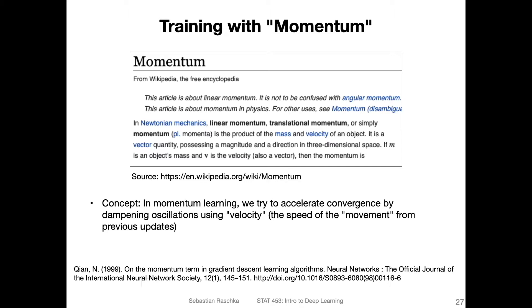Here's a definition of momentum from physics from Wikipedia. In Newtonian mechanics, linear momentum, or translational momentum, or simply momentum, is the product of the mass and velocity of an object. When we talk about stochastic gradient descent and weight updates, we don't have a mass, but we can consider a velocity of the updates, the speed of the updates essentially.